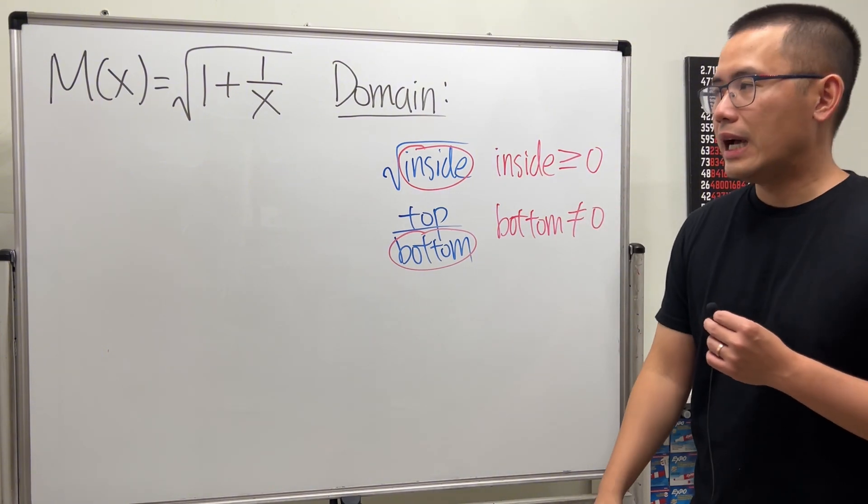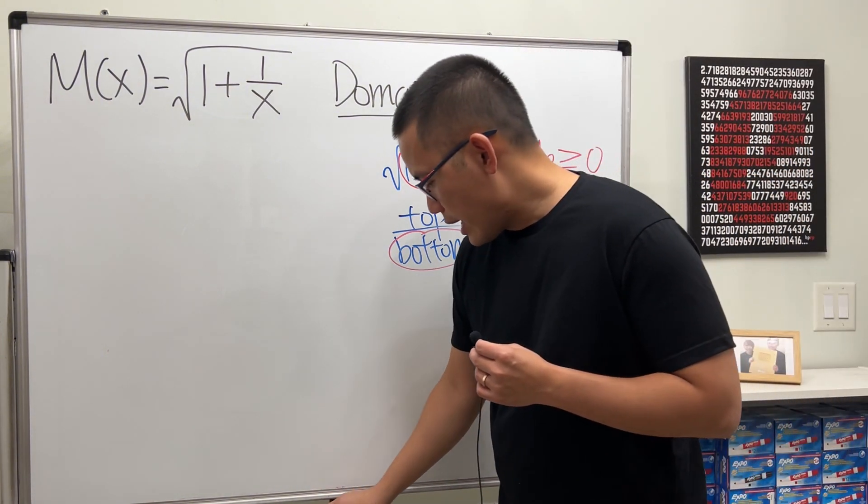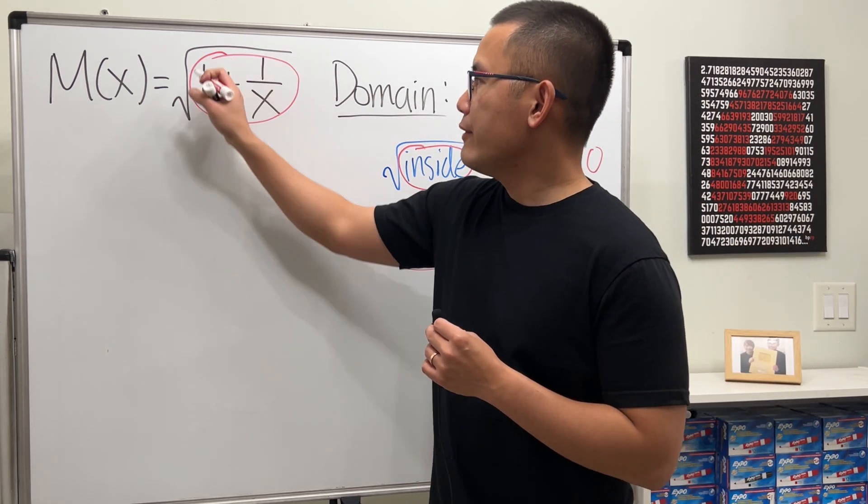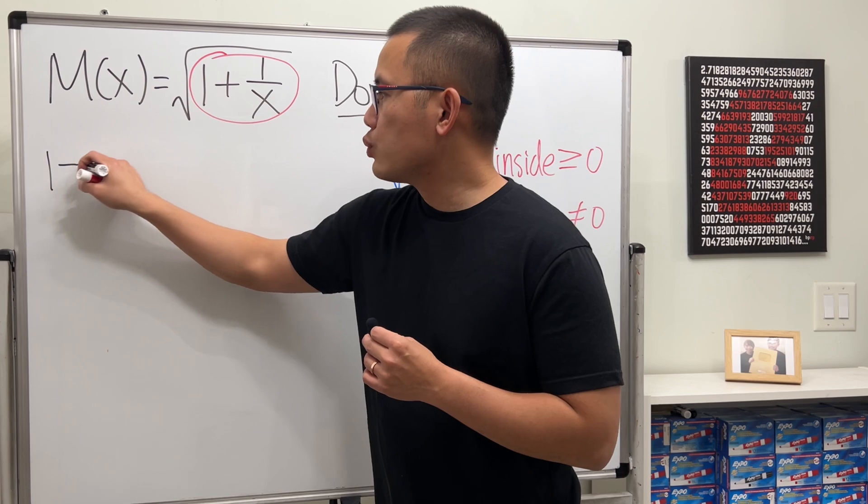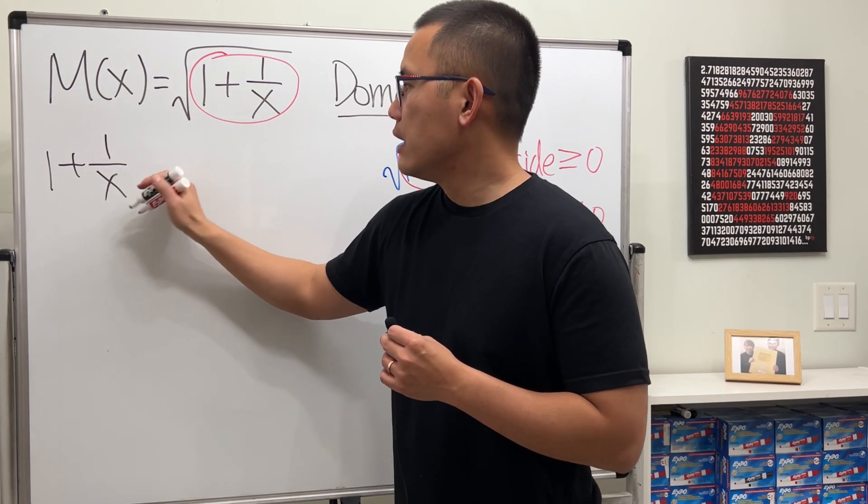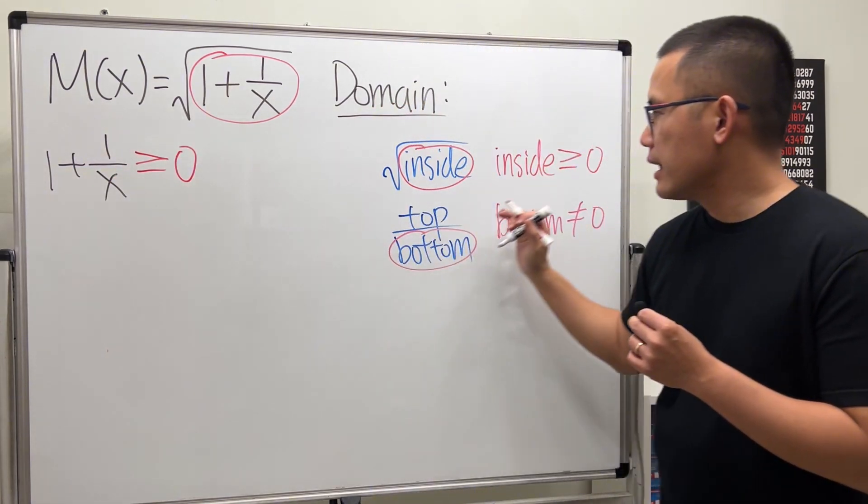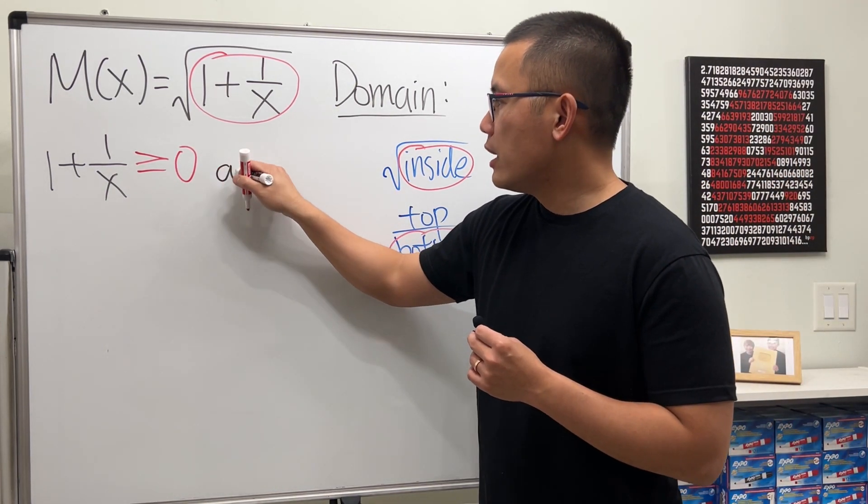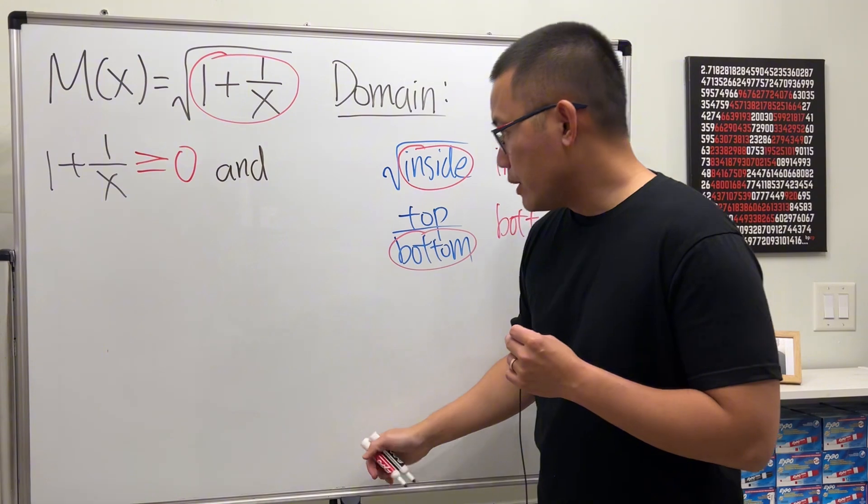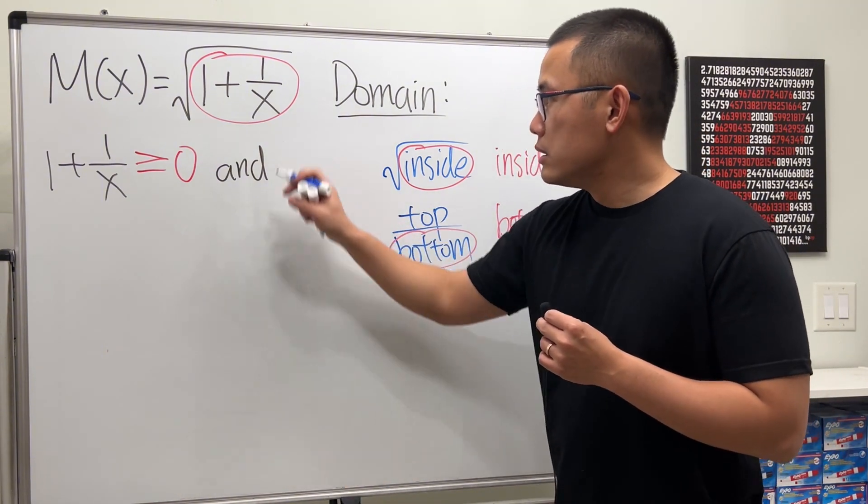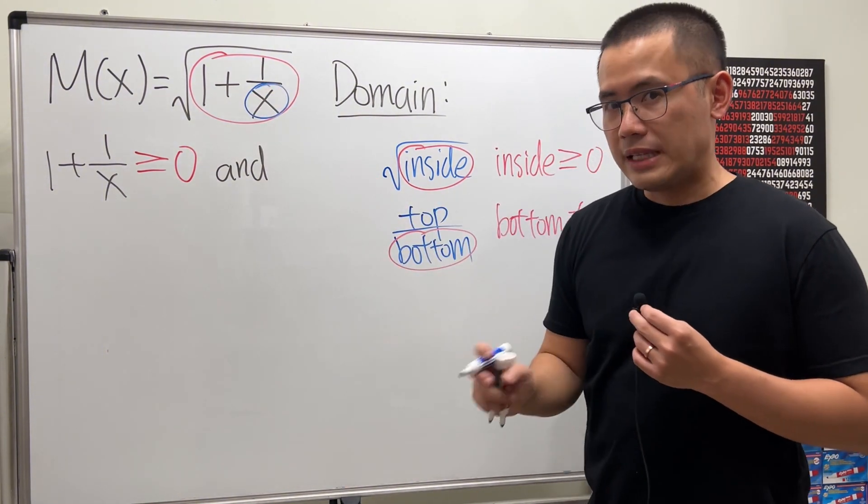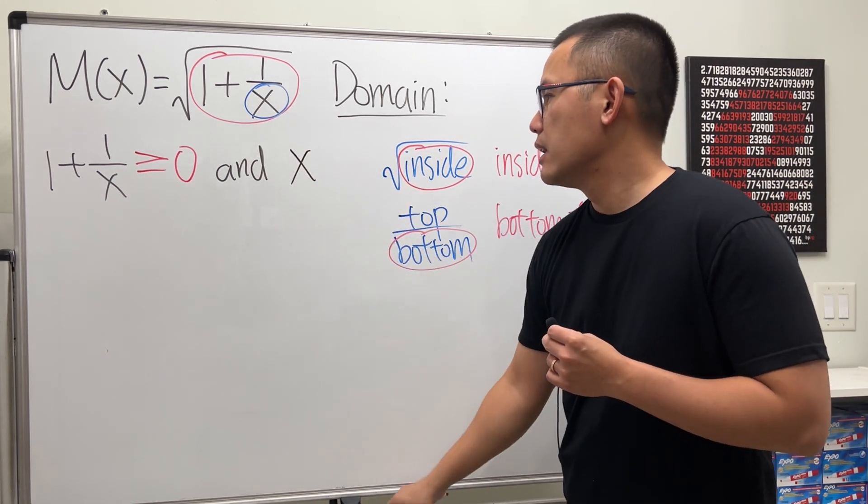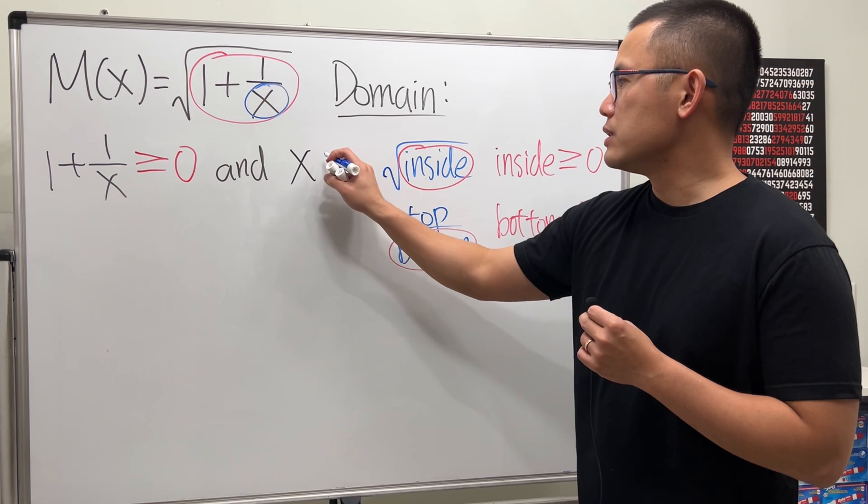So there are two conditions that we have to worry about. Right here, let's begin with the first one. We have to make sure that the inside, which is 1 plus 1 over x, is greater than or equal to 0. That's from the first condition here. And the second condition is that we have to make sure the x on the bottom is not equal to 0. So let's write it down. The bottom x cannot be equal to 0.